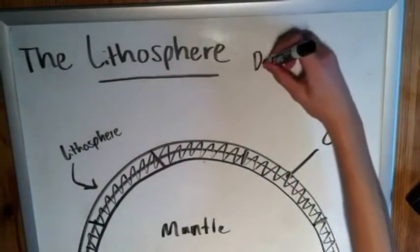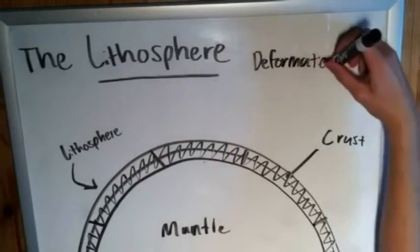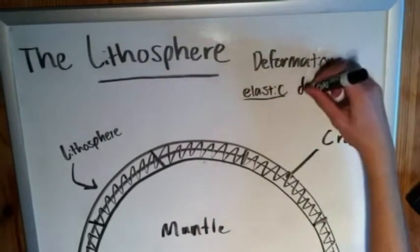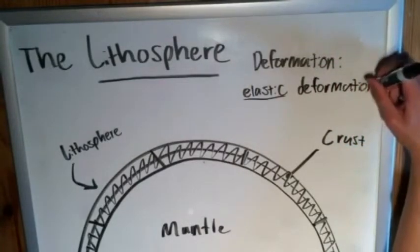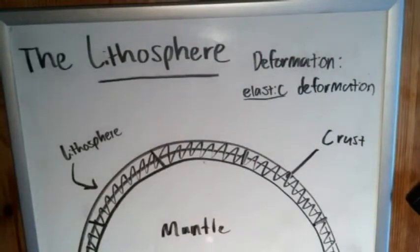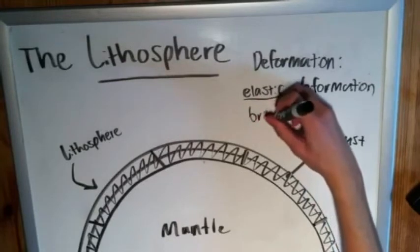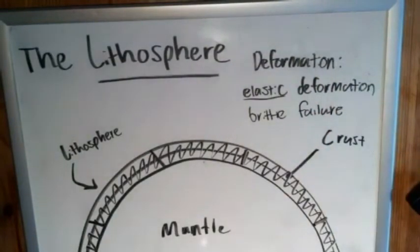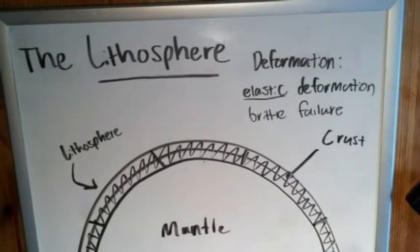Deformation is a key idea when talking about the lithosphere. Two things to keep in mind: it undergoes elastic deformation over a long period of time — meaning it deforms but can also be restored back to its previous position, usually under very high pressures and temperatures — and it undergoes brittle failure, which is a sudden snap, like a fault.